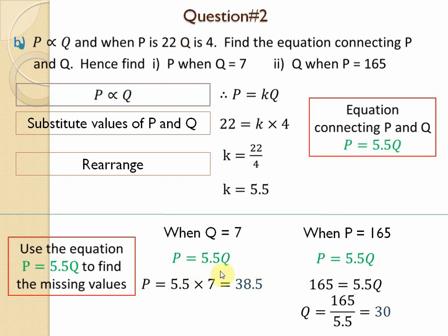Both parts are solved separately. First write the equation p = 5.5q to find p, then write the equation again and substitute the value of p to find q. This is the simple method to solve direct proportion questions.